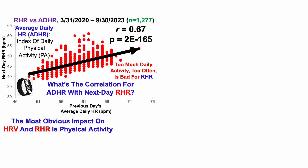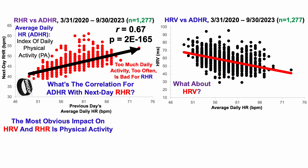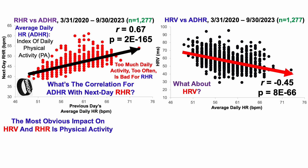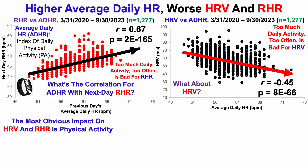In other words, too much daily activity too often will be potentially bad for my resting heart rate. So what about heart rate variability? We can see that data here, and now there's a significant negative correlation — too much daily activity too often is potentially bad for heart rate variability. Together, we can see that the higher my previous day's average daily heart rate, that's significantly correlated with worse data for heart rate variability and resting heart rate.